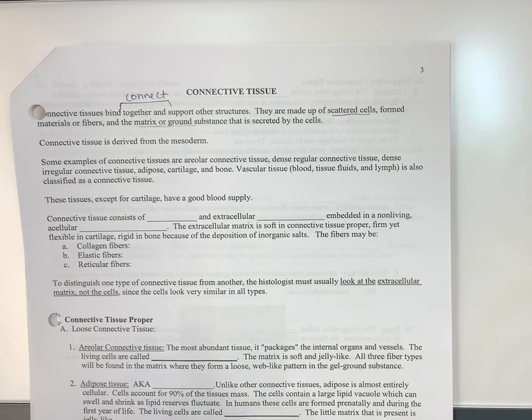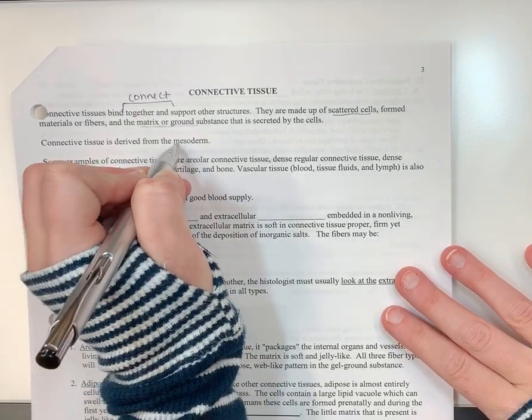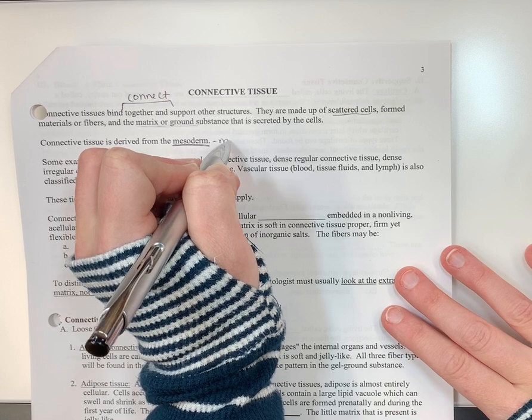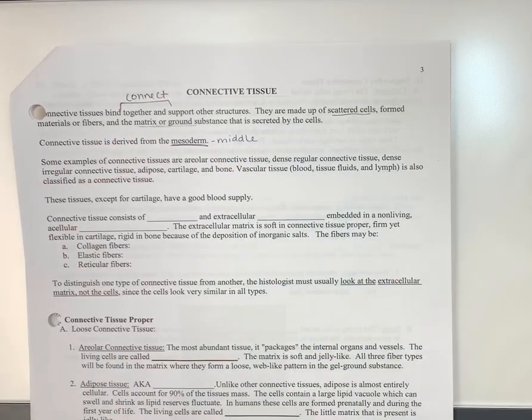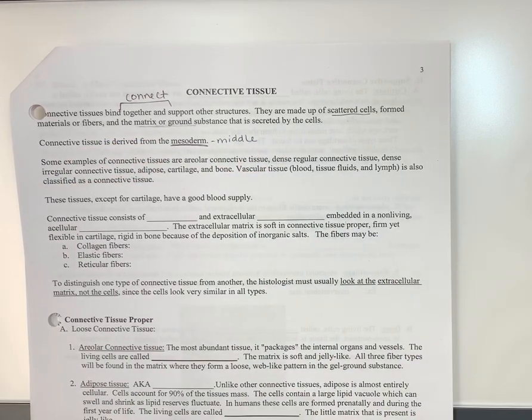All connective tissue comes from the mesoderm. That would be the middle layer in the developing embryo. So think about it. It makes sense. If you're going to connect things, you need to be able to reach the top and the bottom, right? So you remember it's in the middle.